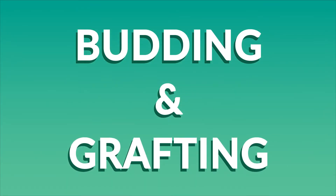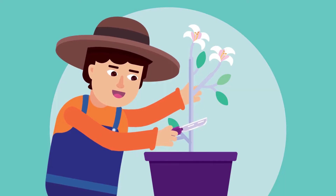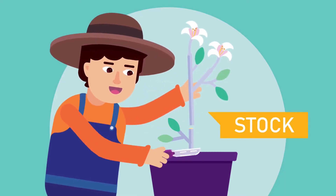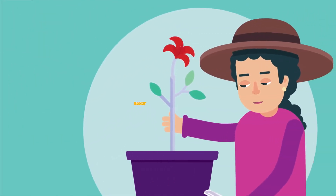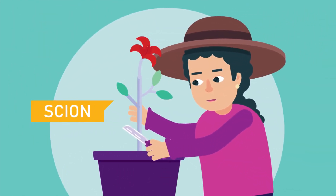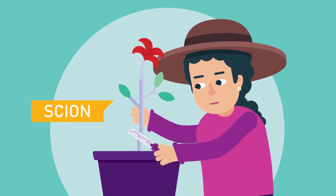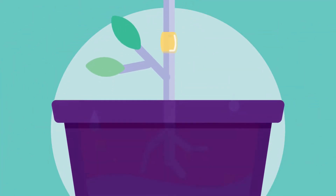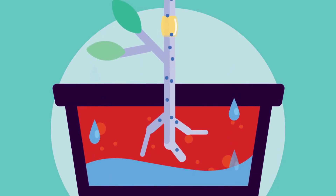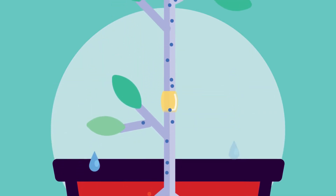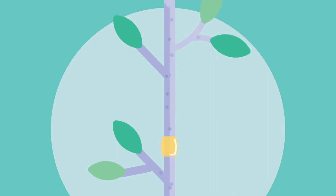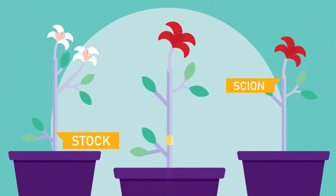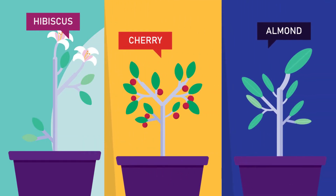Budding and Grafting: These methods use a healthy plant with a built-up root system called the stock. The other part is the scion — a section of the plant that will be propagated. The scion is carefully trimmed, then attached to the stock so it will grow together. The stock absorbs water and breaks down minerals through its roots and transports them to the developing scion. For such purposes, the scion and the stock are usually of related species, for example hibiscus, cherry and almond.